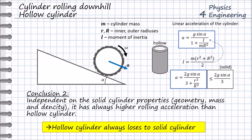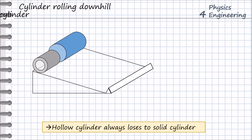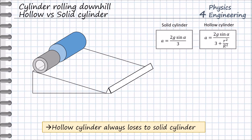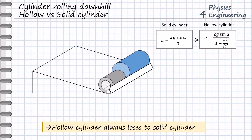For confirmation, we can do a short test. We compare the rolling speed, rolling acceleration, and rolling time of the hollow and solid cylinders. The blue bigger cylinder is solid, and the smaller gray cylinder is hollow. We just derived that the linear acceleration of the solid cylinder does not depend on its geometry and mass properties, and the linear acceleration of the hollow cylinder depends on its inner and outer radii. Therefore, the solid cylinder will always be quicker than the hollow cylinder. If we now release these two cylinders, we see that the solid cylinder arrived first, and the hollow will follow.